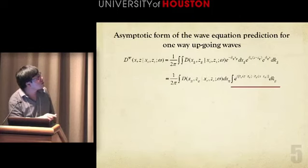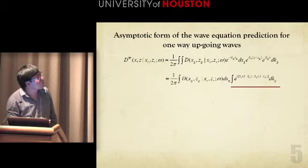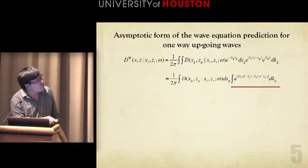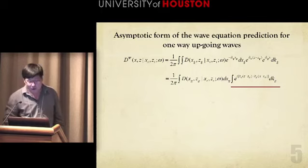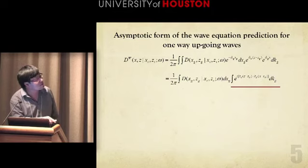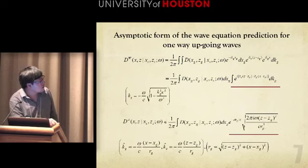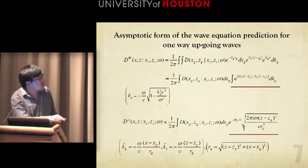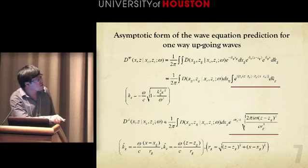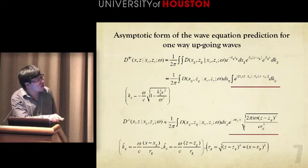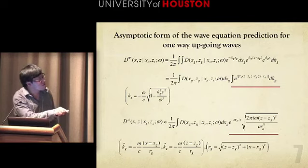And to get an asymptotic form of the wave equation prediction for the one-way up-going waves, this is the expression from the last slide. We rearrange the integral. Here, this is the integral on dk_g. We apply the stationary phase approximation on this integral on dk_g. And the corresponding stationary point k_g is this, and the corresponding k_z hat is this expression, and R_g defined like this. So this expression, underlined in the red line, is the approximation of this expression.